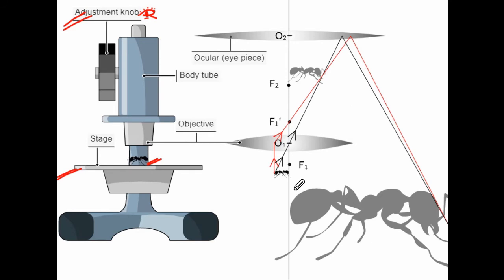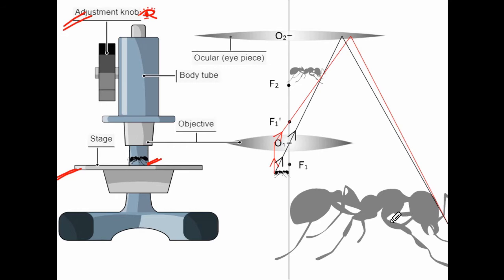First, the object gets focused by the objective lens, which produces an image. You have to adjust the first lens image position. By adjusting the eyepiece, a magnified image is produced. This image with respect to the eye — that is, the observer — will be somewhere here.